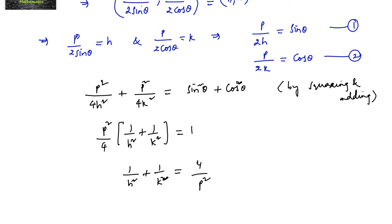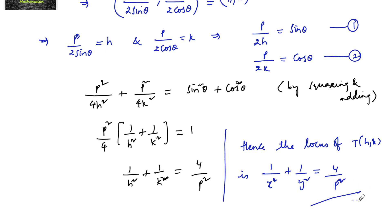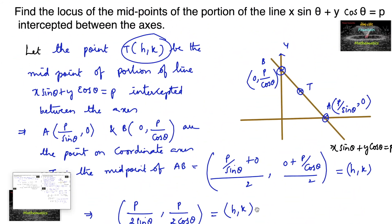Hence the locus of point T(h, k) — replacing h and k with x and y — is 1/x² + 1/y² = 4/p². This is the locus of the midpoint of the line intercepted between the coordinate axes.